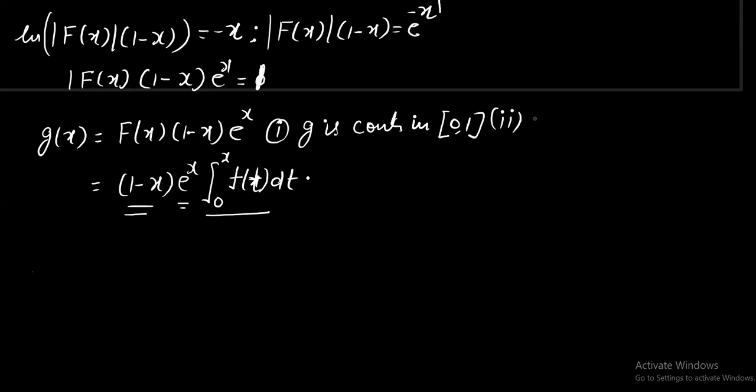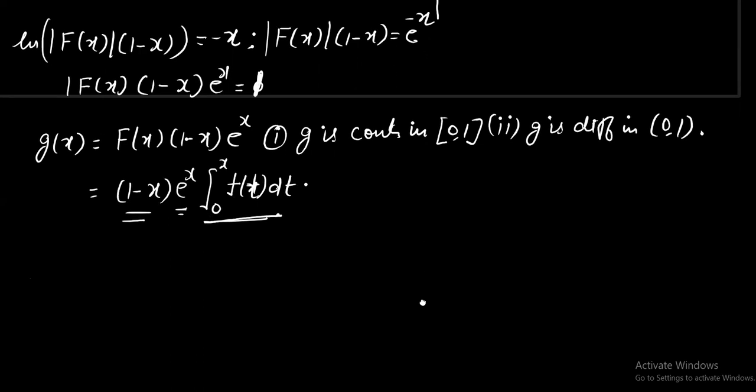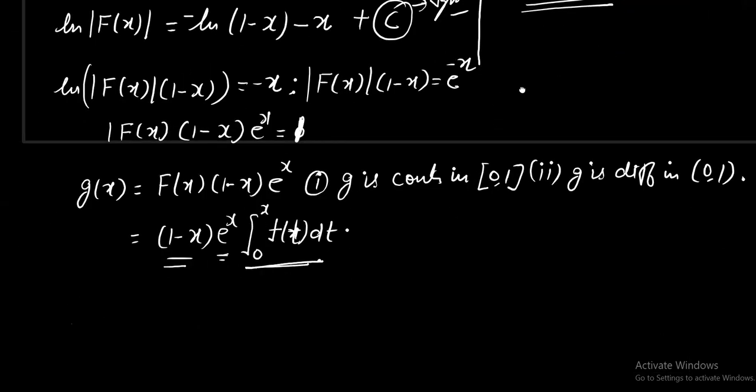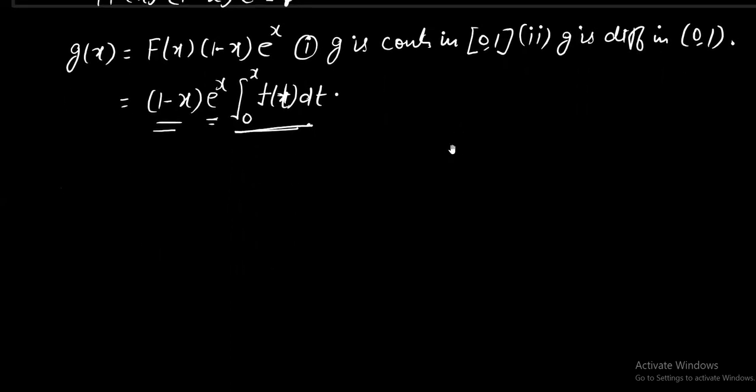Second, is g differentiable? g is differentiable in (0,1). Yes, (1-x) is differentiable. eˣ is differentiable. This section ∫₀ˣf(t)dt, f is continuous and I wrote here fundamental theorem of calculus. From that, it is differentiable as well. So, two conditions are satisfied. g is continuous. g is differentiable. Third one, g(0) = 0. You can check it is 0. g(1) is also 0. So, all three postulates of Rolle's theorem are satisfied.